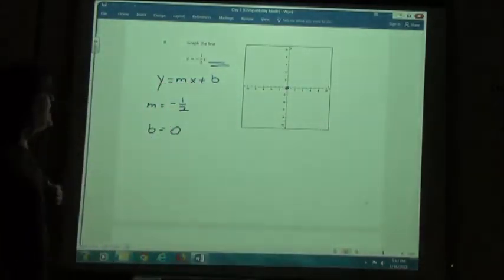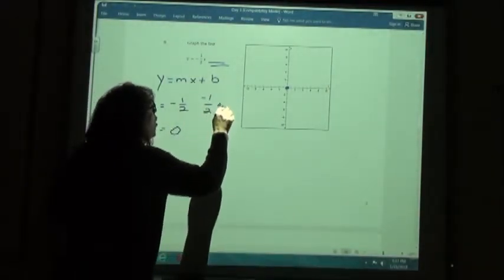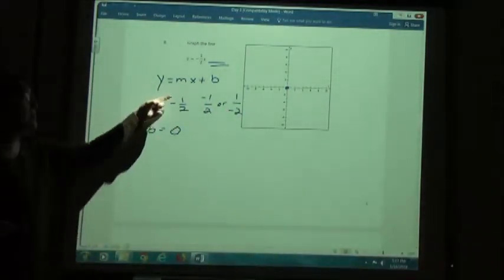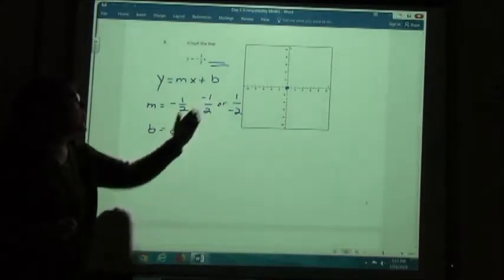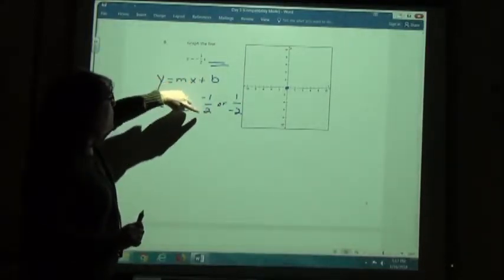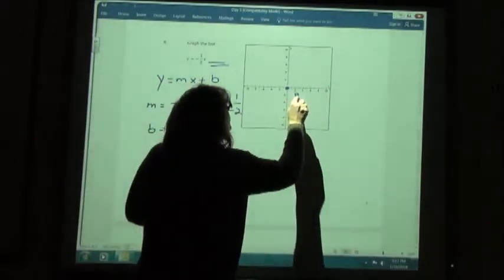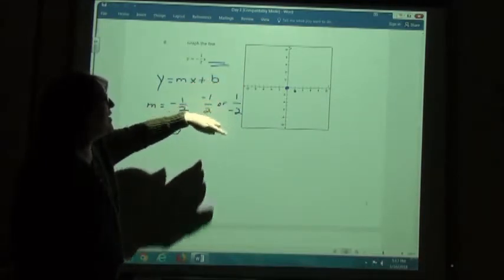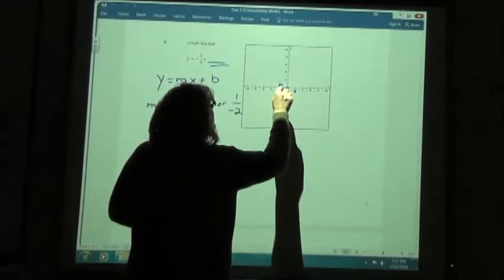My slope is negative 1 half. I'm either going to think of it as negative 1 over 2 or positive 1 over negative 2. The negative is either on the top or on the bottom, not both. If I do both directions, if it's negative 1 over 2, I'm going to go down 1 and to the right 2. Down 1 and to the right 2. If I think of it as positive 1 over a negative 2, I'm going to go up 1 and to the left 2. Up 1 and to the left 2.